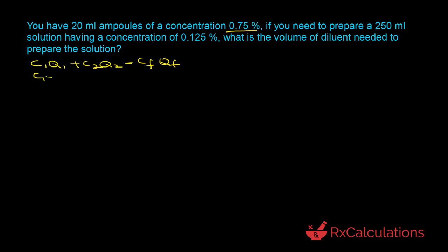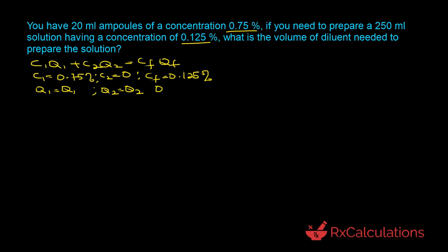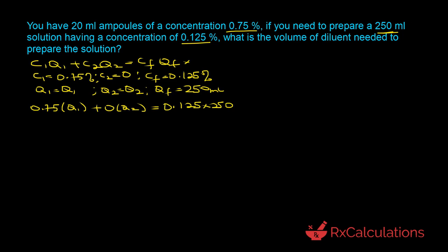From this question: C1 is 0.75%, Q1 is unknown so we keep the variable Q1. C2 is the concentration of the diluent — since it has no API it equals zero — and Q2 is also unknown. The final concentration Cf is 0.125% and the final quantity Qf is 250 milliliters. Substituting into the equation gives: 0.75·Q1 + 0·Q2 = 0.125 × 250.